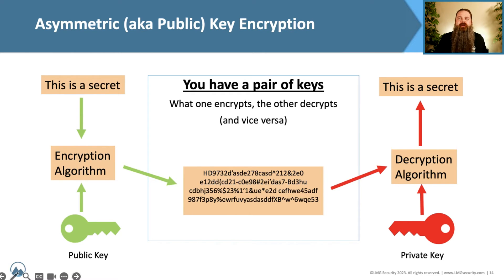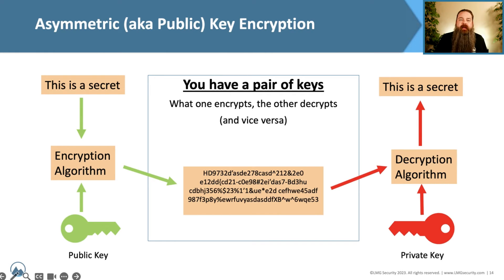In general, this means something pretty simplistic. Instead of there being a single encryption key that both encrypts and decrypts the data, we break this off into two elements: we have a public key and we have a private key. What one encrypts, the other decrypts — or what one locks, the other unlocks.